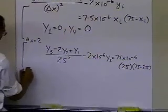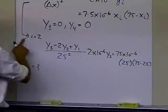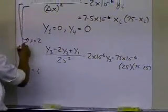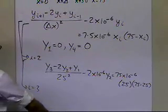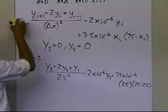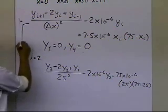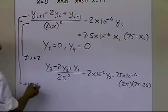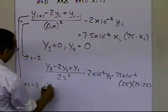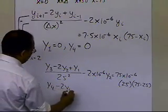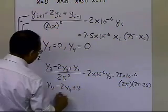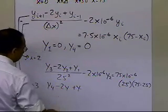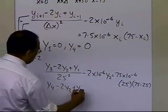Same thing for i equal to 3. I'm going to write down this general equation for i equal to 3, which means substituting node i equal to 3. I get y4 minus 2y3 plus y2